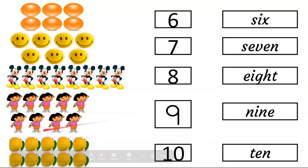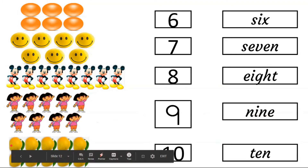How many mangoes are here? 1, 2, 3, 4, 5, 6, 7, 8, 9, 10. 10. T, E, N. 10.